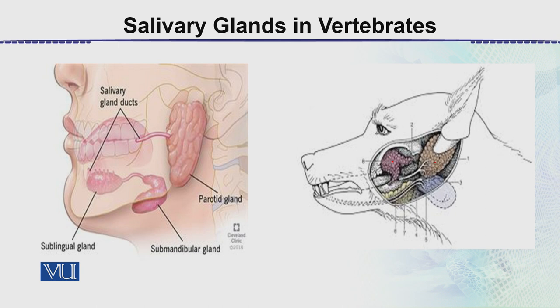In humans, there are three locations for salivary glands: below the tongue, behind the jaws, and in front of the ears. These salivary glands secrete saliva, and saliva contains enzymes. When we chew food, saliva from the salivary glands is continuously mixed with it. You may have noticed that when we chew any starchy food, it starts to taste sweet.